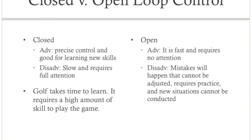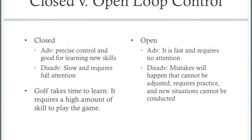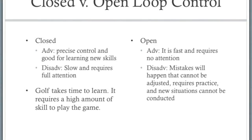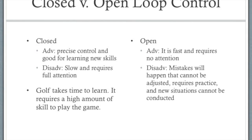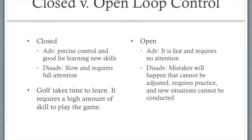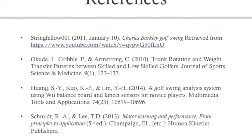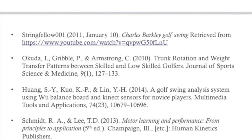However, golf takes time to learn and requires a high amount of skill to play the game. When starting to play, players take their time to practice and get used to the club and the sport itself. By starting off as a closed loop of control, golfers and other athletes consider their sport to become second nature, becoming autonomous as time goes on. In conclusion, thank you for listening to my presentation on the golf swing movement analysis with emphasis on weight distribution.